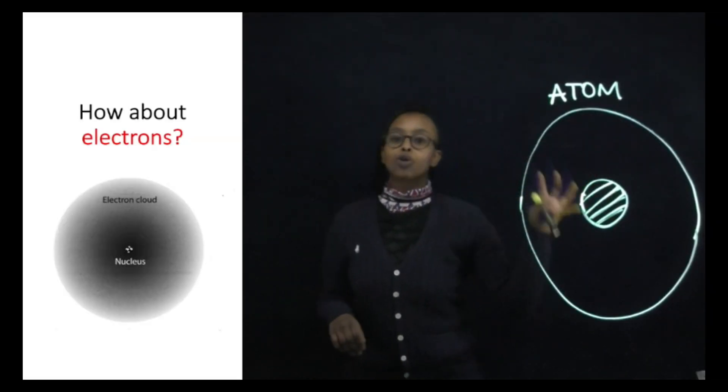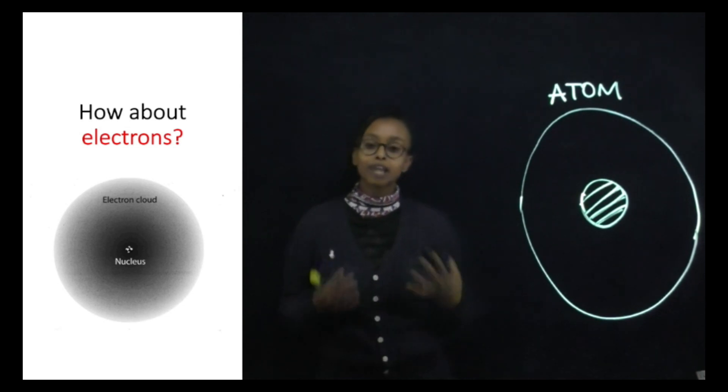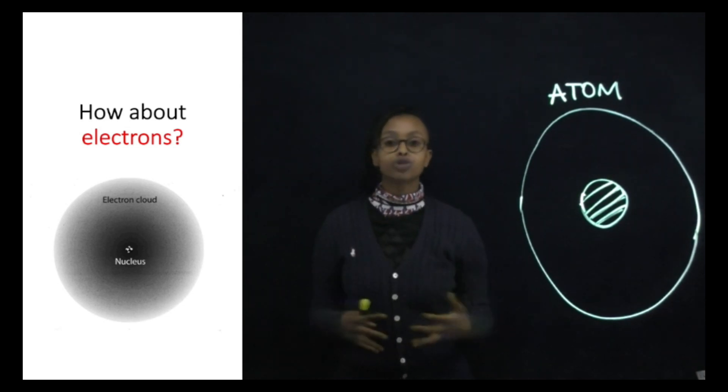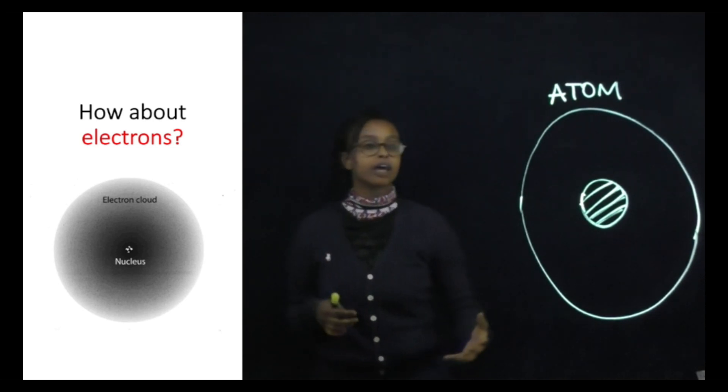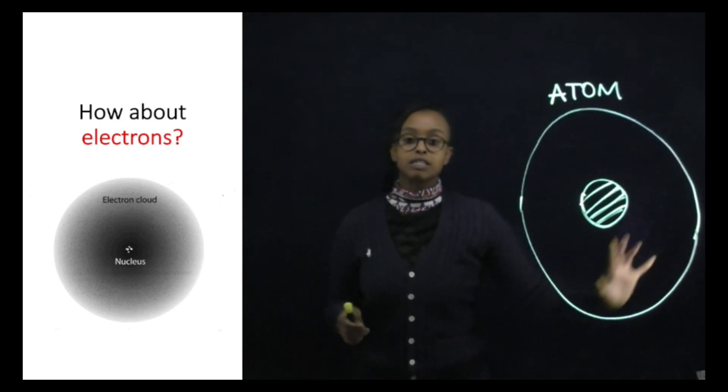So the nucleus is the core of the atom. And electrons are much lighter than protons or neutrons. So electrons aren't encompassed in the atomic mass. Electrons instead just float around in this empty space.